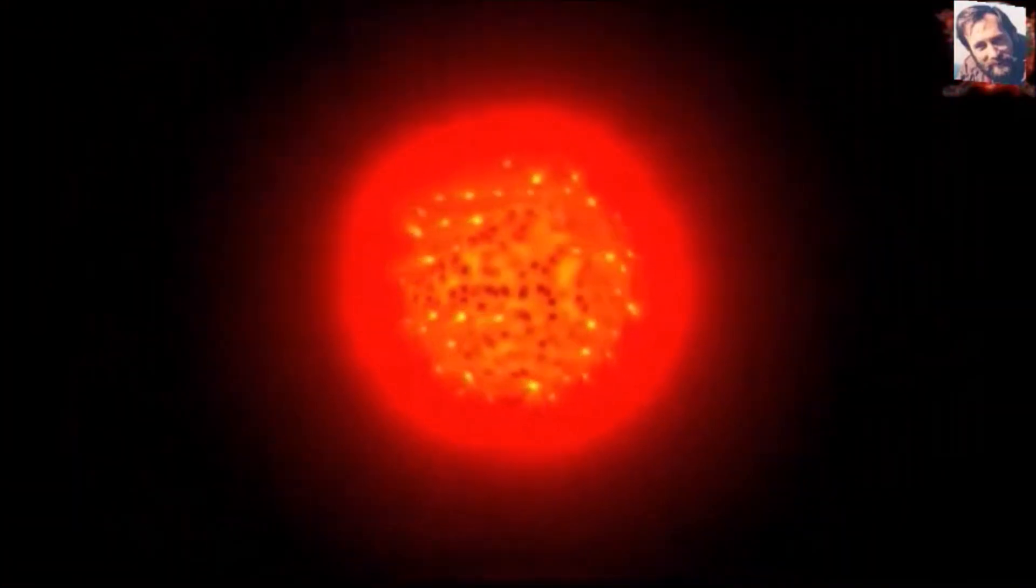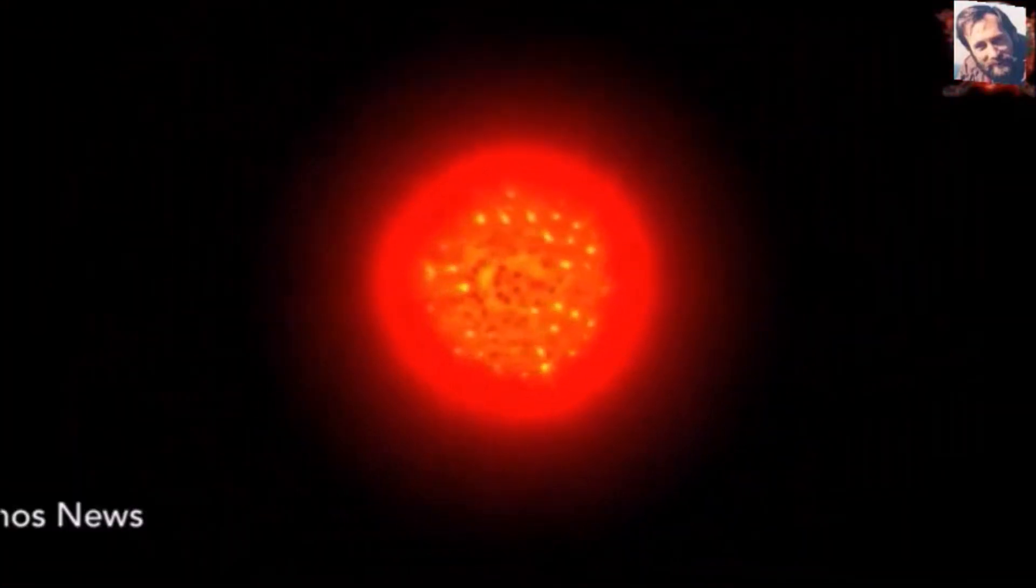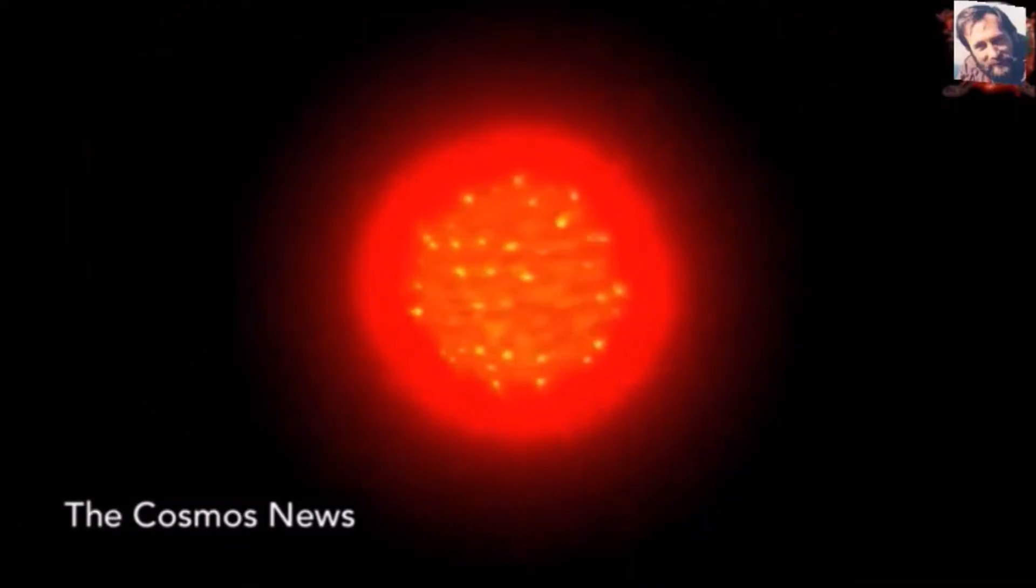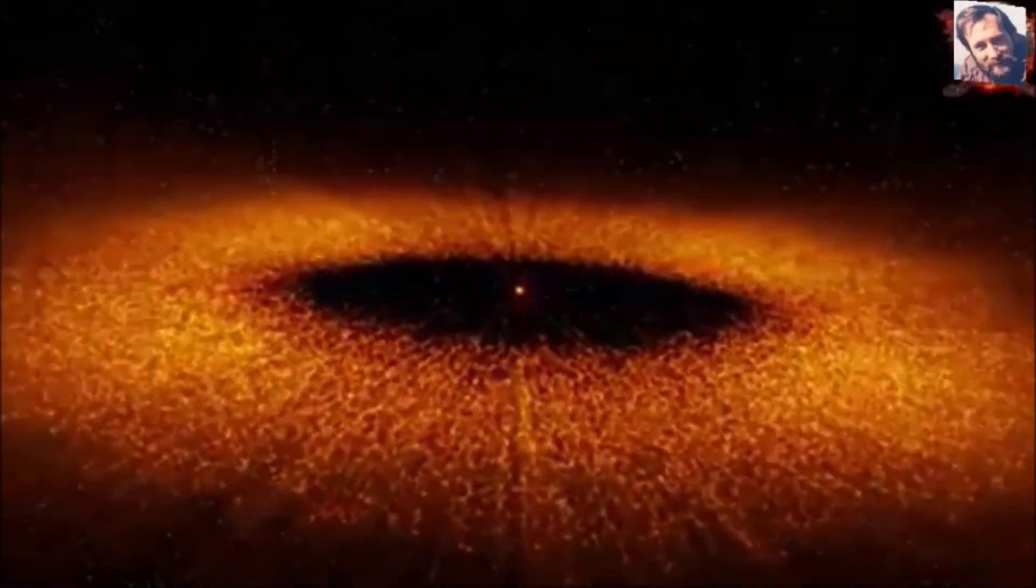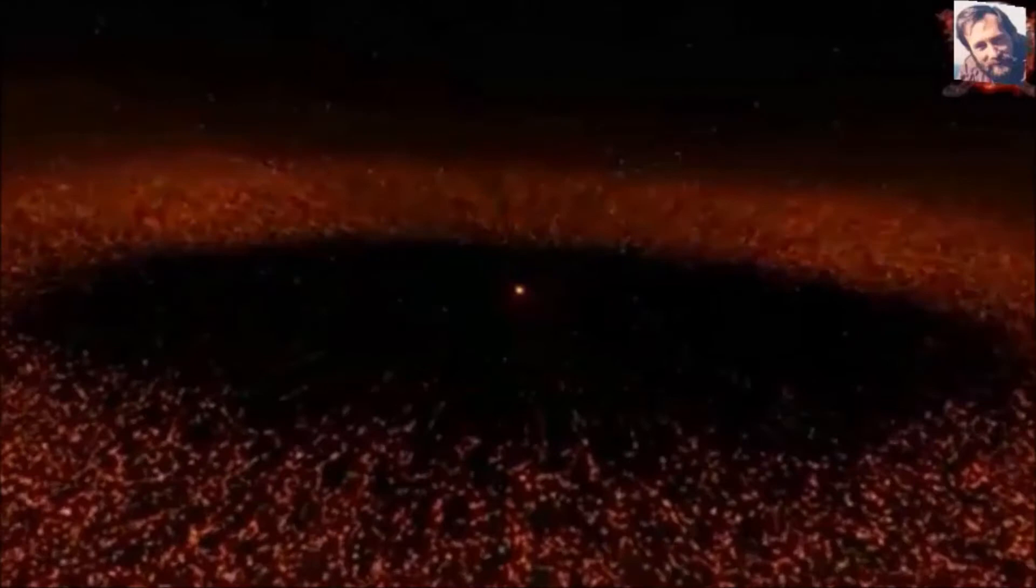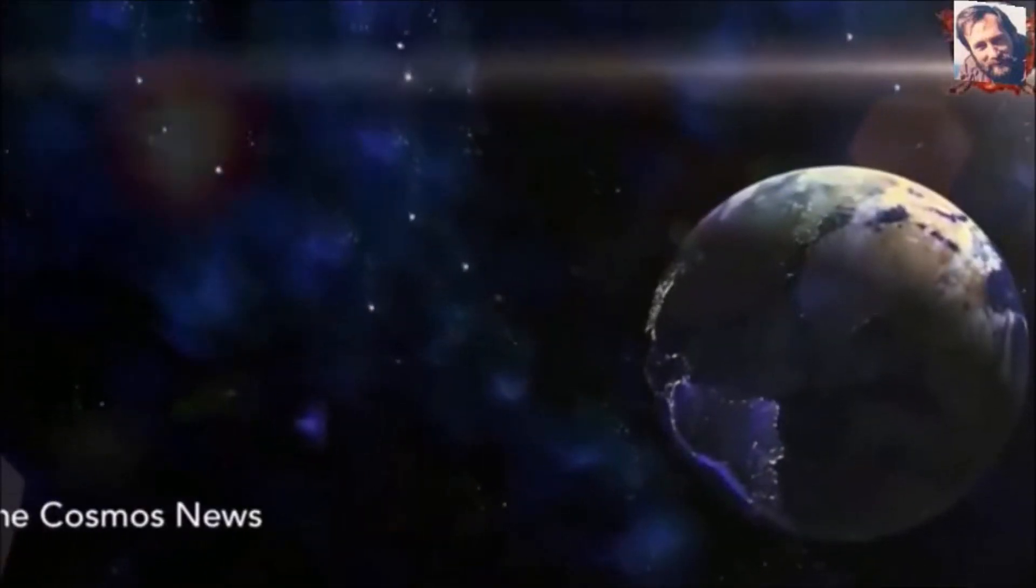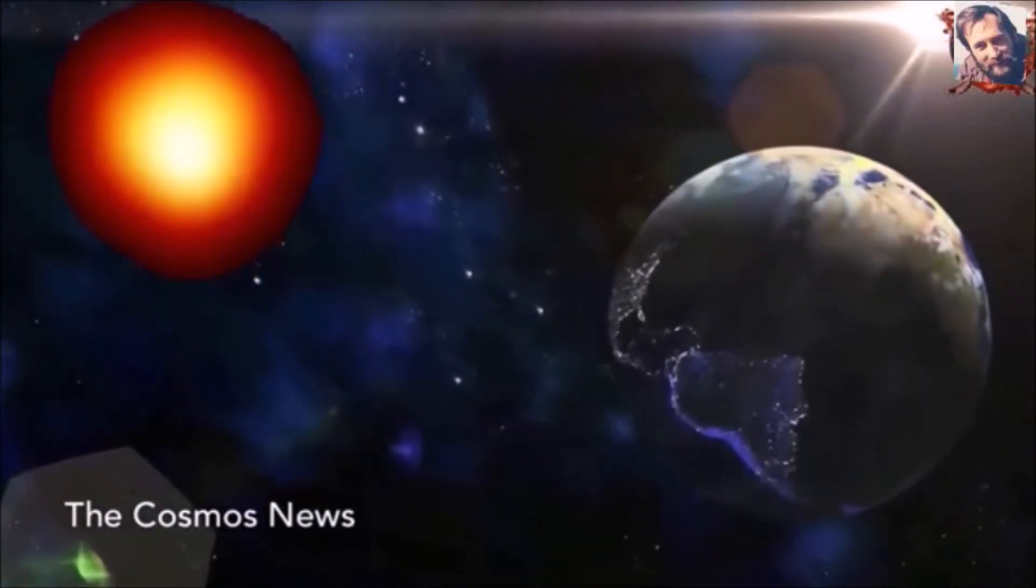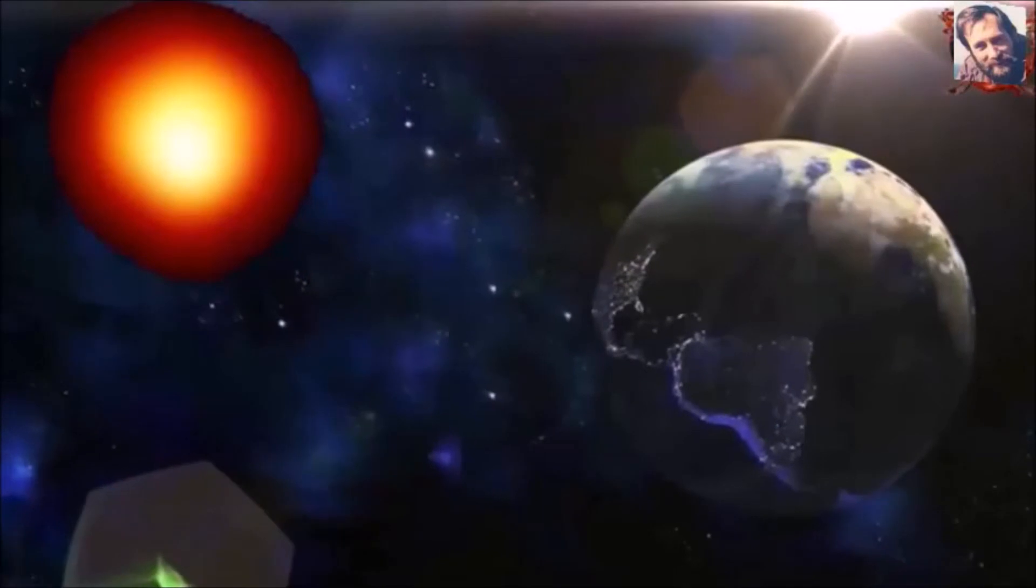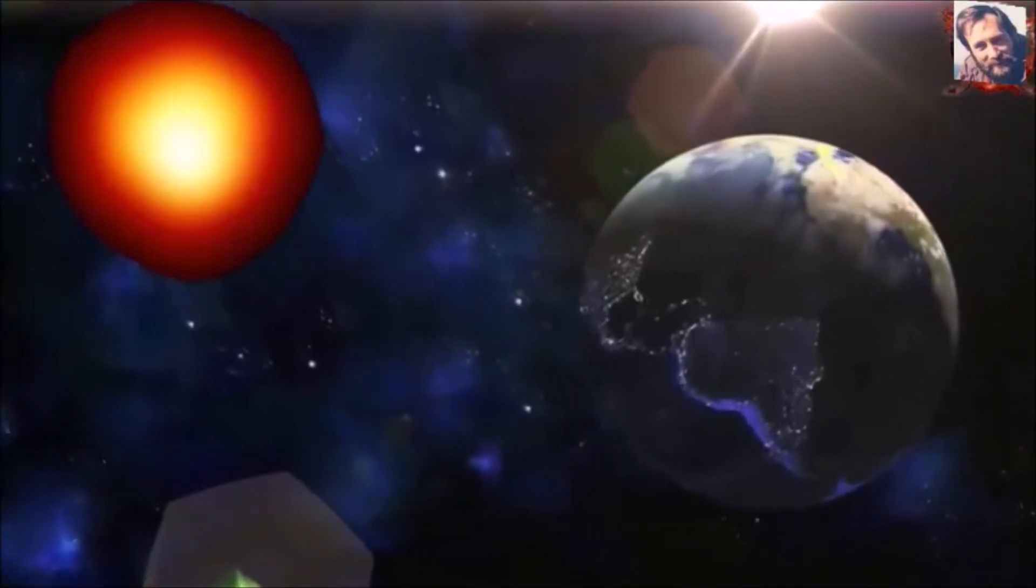When Betelgeuse does blow up, our planet Earth is too far away for this explosion to harm, much less destroy, life on Earth. Astrophysicists say we'd have to be within 59 light years of a supernova for it to harm us. Betelgeuse is nearly 10 times this distance. So we're safe from Betelgeuse. And, in fact, if there are any astronomers around when it does blow, they will be extremely thrilled to have a relatively nearby supernova to study.